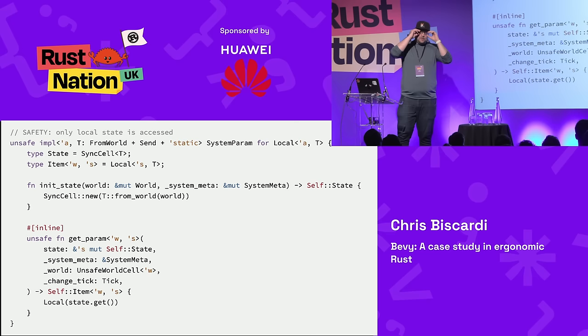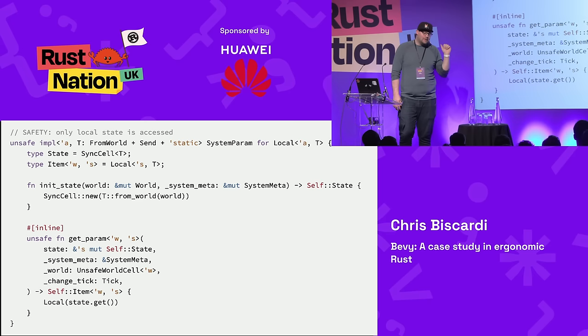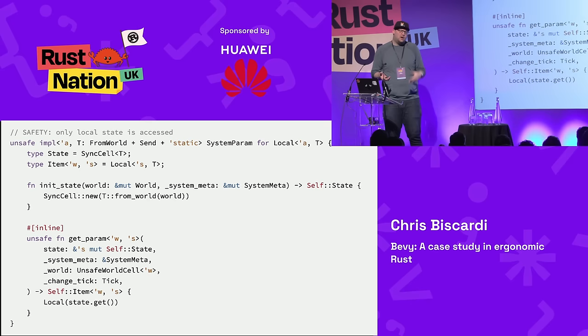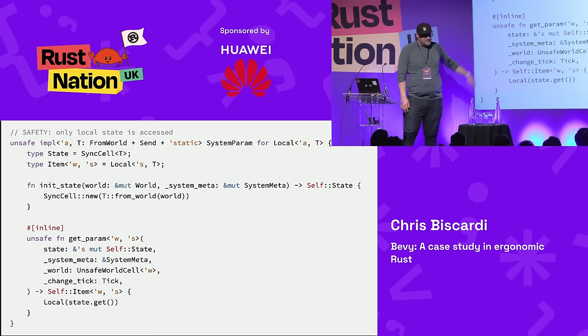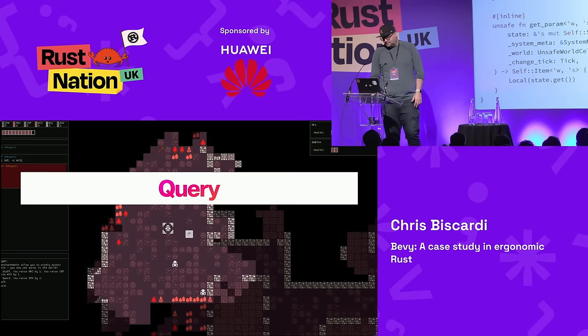This is the implementation of SystemParam for Local. It's the simplest implementation you're going to see — Query and other things are much more complicated and don't fit on a slide. We've got some type T, a SyncCell T and Local T. We initialize our state using FromWorld — think of it as default with access to the world. We get the param, and when we get it in the actual system, we unwrap to get our U32 value.